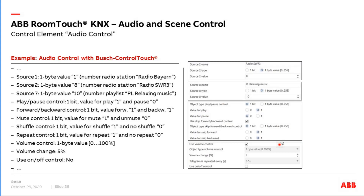Here's an example of how it works with my RoomTouch and Sonos speaker together with the Control Touch. I use all eight sources. For example, source number one is Radio Bavaria, source number eight is SWR3, and number ten is my playlist for relaxing music. Source number two (SWR3) is a one-byte value and I send the value eight, because that is my number eight favorite in my Sonos system. For the relaxing music playlist, this is number ten in the Sonos favorites, so I send value ten.